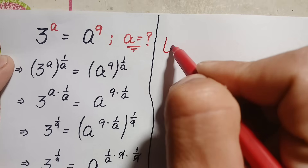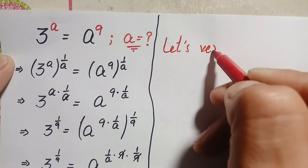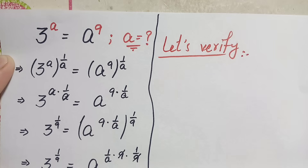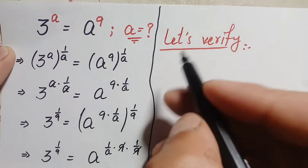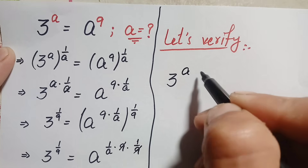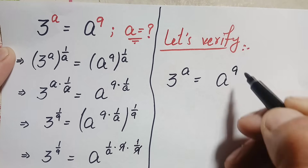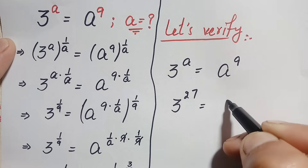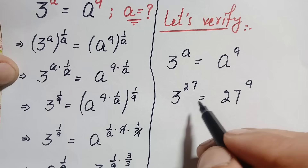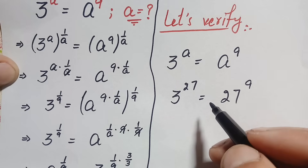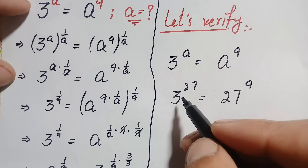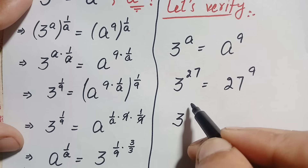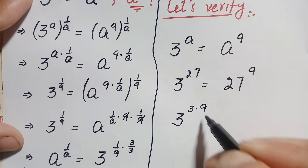Let's verify. We write our original problem: 3 × 2^a = 8 × 2^9. Substituting a = 27, we get 3 × 2^27 = 8 × 2^9. On the left hand side, we write 27 as 3 × 9, so we have 3 × 2^(3×9).